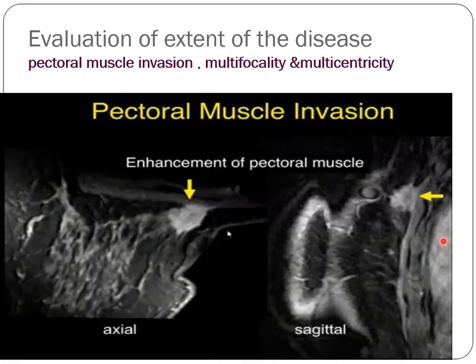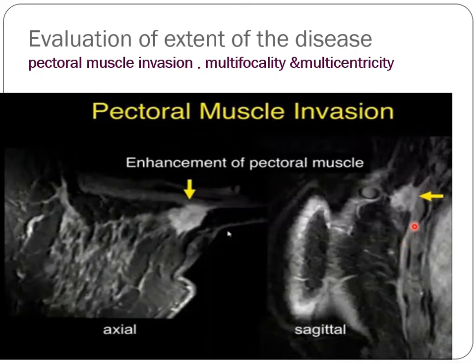One key indication is evaluation of extent of disease. If a surgeon operates based only on ultrasound and mammogram, they may miss findings visible on MRI — such as pectoralis muscle invasion. Multifocality and multicentricity of a lesion can be identified only by breast MRI, which is critical for surgical planning.